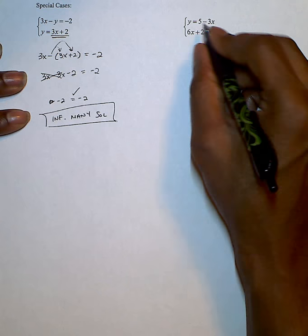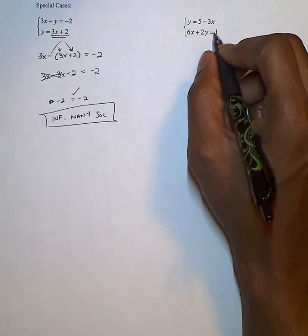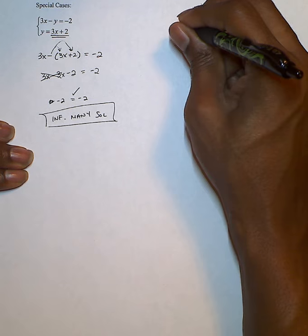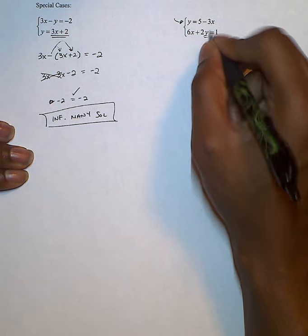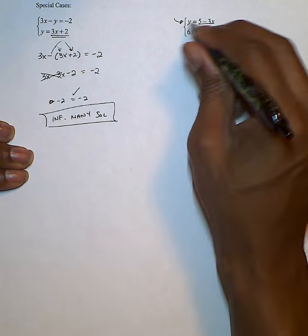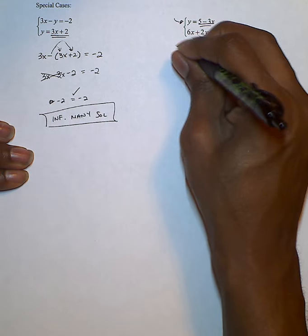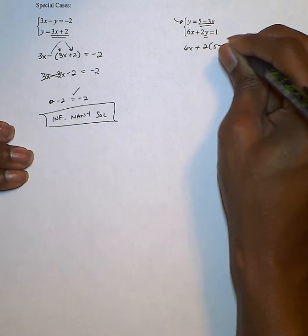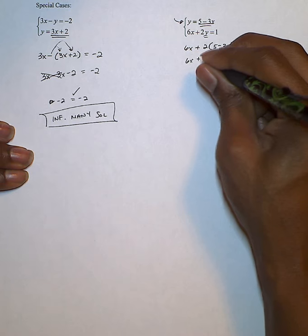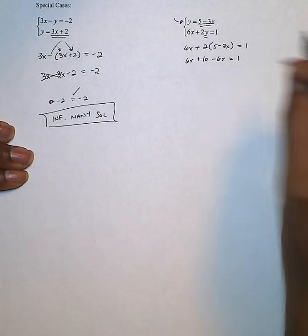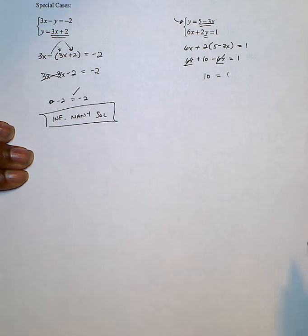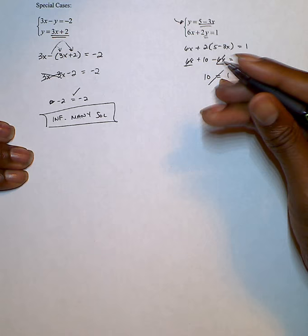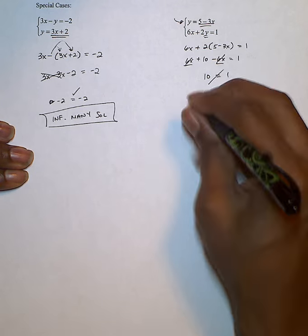In our next problem, we have y equals 5 minus 3x and 6x plus 2y equals 1. The first equation is already set up for substitution. In the second equation, instead of y I'll use 5 minus 3x, because y is the same as 5 minus 3x. So I have 6x plus 2 times (5 minus 3x) equals 1. After distributing, I get 6x minus 6x, which is 0, and 10 equals 1. When does 10 equal 1? Never. This is an incorrect statement, so we have no solution.